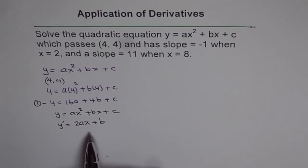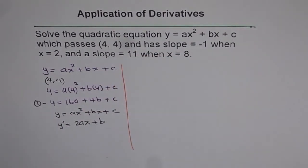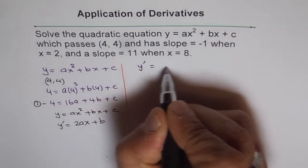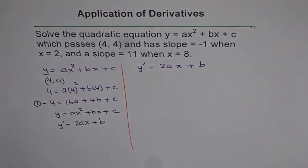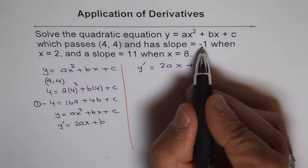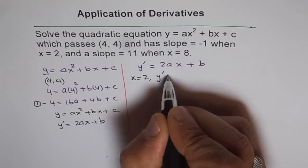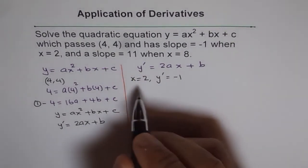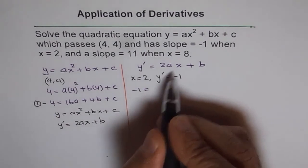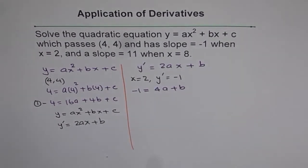We will put the two slope conditions into the derivative equation. The first condition is that slope equals minus 1 at x equals 2, so y dash equals minus 1. Substituting: minus 1 equals 2 times 2 times a plus b, which gives minus 1 equals 4a plus b. That is Equation 2.